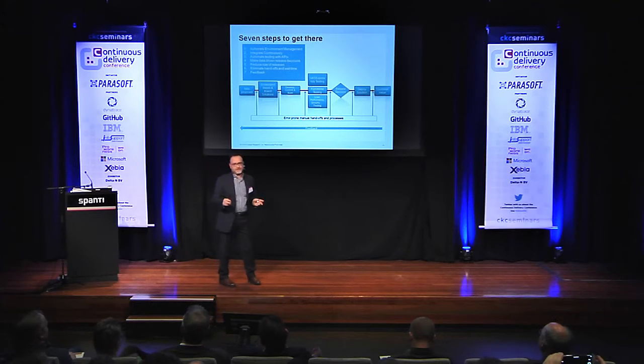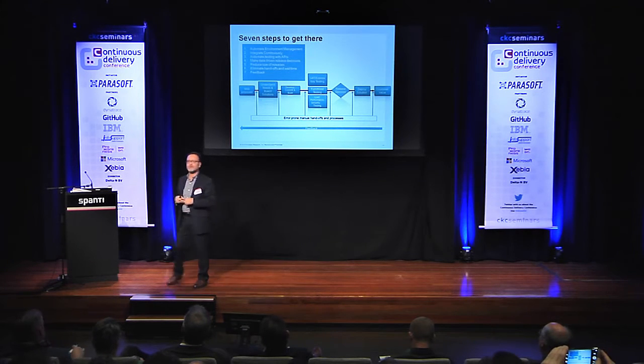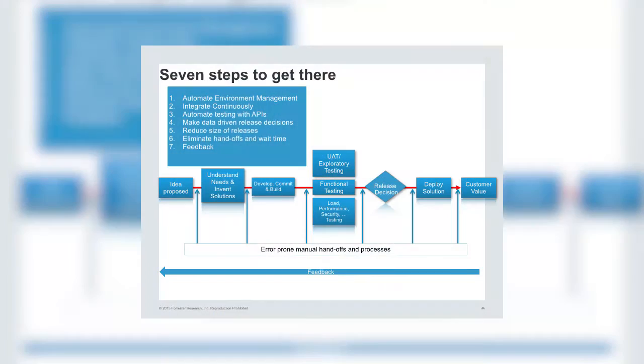Here are seven steps to get there, because that's the question everybody always has — what do I need to do? The order might change depending on where you are, but the key steps are: the first thing is you do have to automate the environment management.